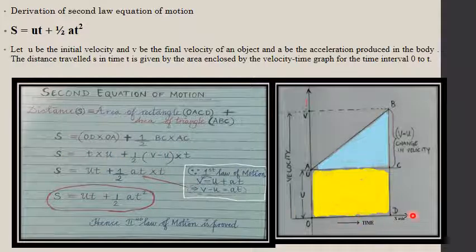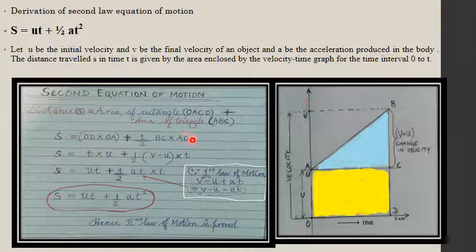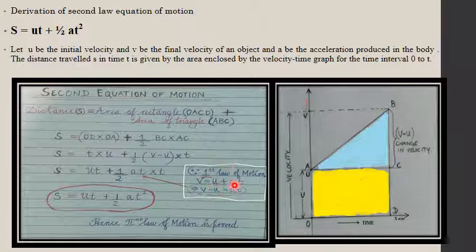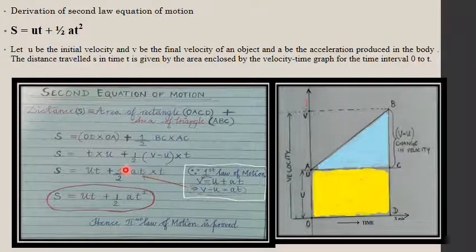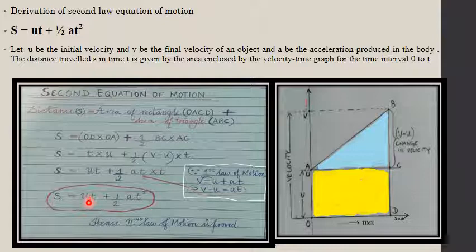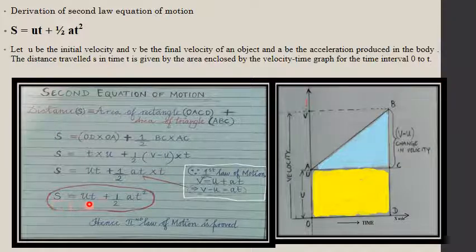S equals OA into OD, plus half of BC into AC. That gives S = t × u + ½ × (v - u) × t. From the first equation, v = u + at, so v - u = at. Substituting: S = ut + ½ × at × t. Since t × t = t², we get S = ut + ½at². Hence the second equation of motion is derived.